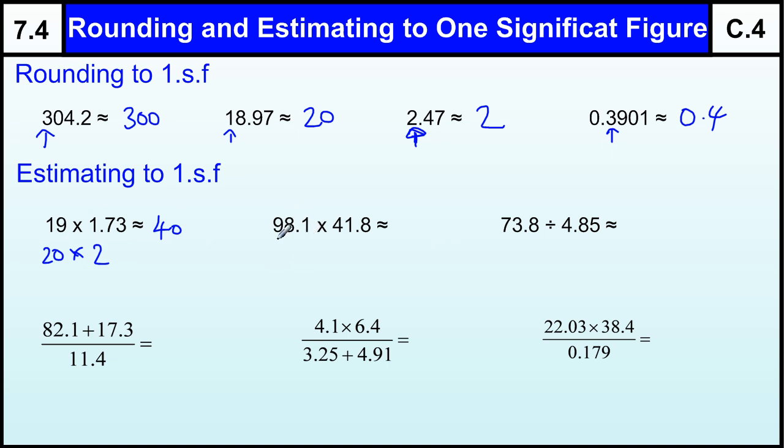98.1, the first digit is a ten, so the nearest ten, that's a hundred. 41.8, so the nearest ten is forty. And a hundred times forty is four thousand.